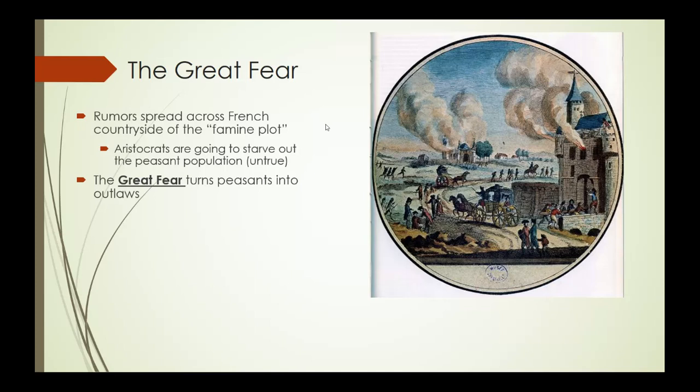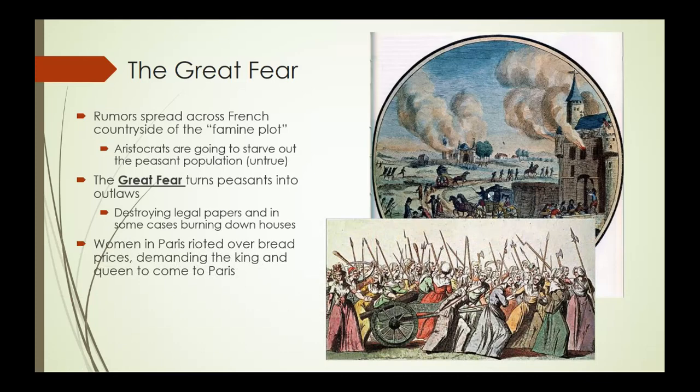This leads to something historians call the Great Fear, which turns peasants into outlaws as they seek to destroy the aristocracy before the aristocracy can destroy them. They set about destroying legal papers, tearing down the French government, tearing down the aristocracy. In some cases, manor houses are burned down. Again, it's this cycle of violence. As things get more revolutionary and more violent, there are people within the revolutionary apparatus — Maximilien Robespierre being the most famous — who are cheering this on and see it as a positive development.